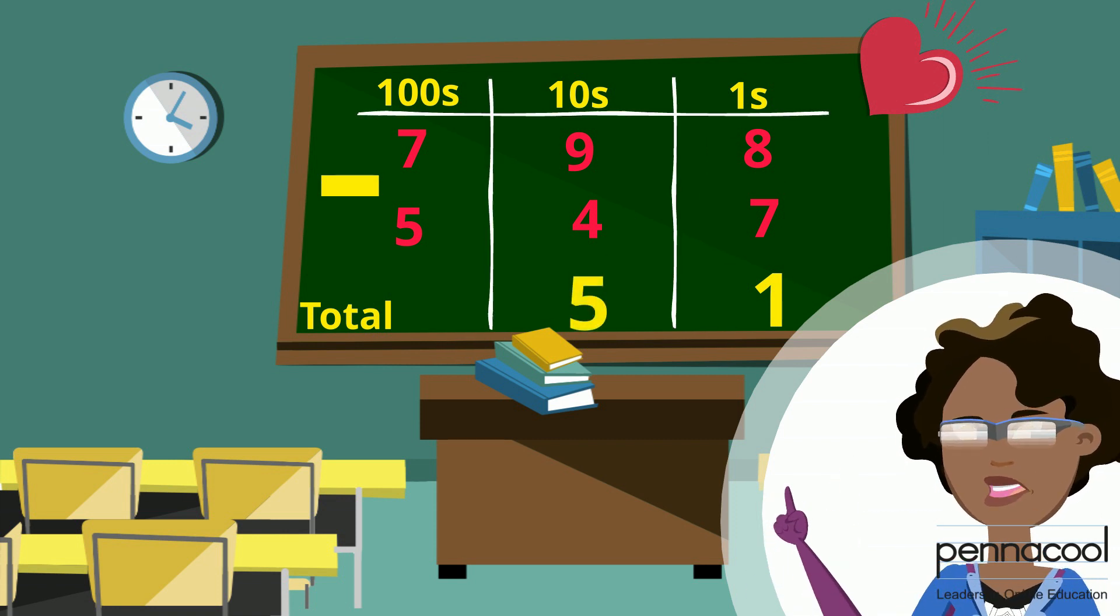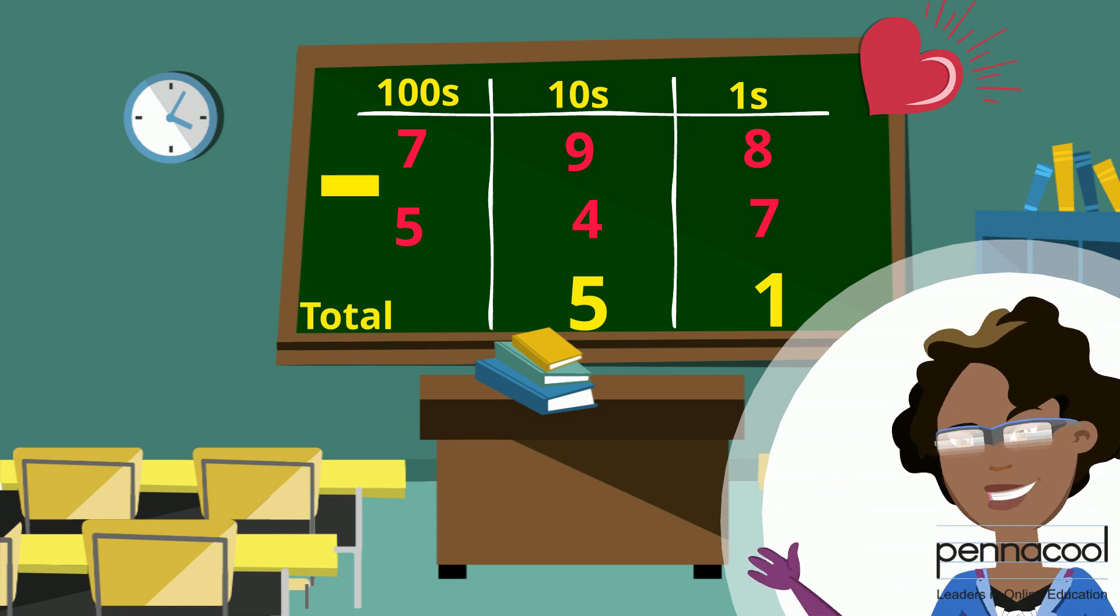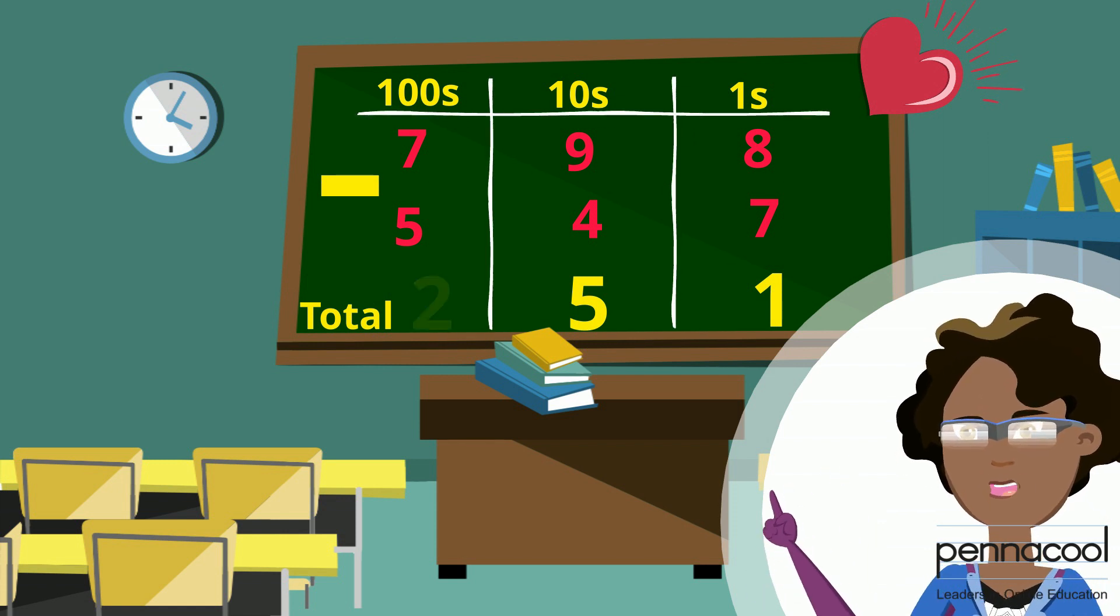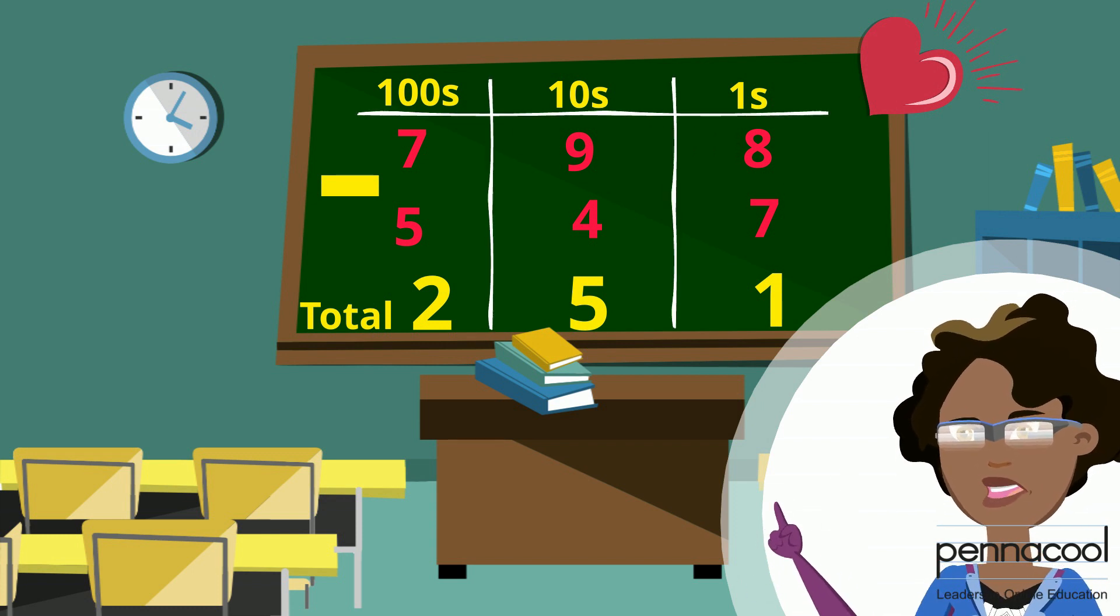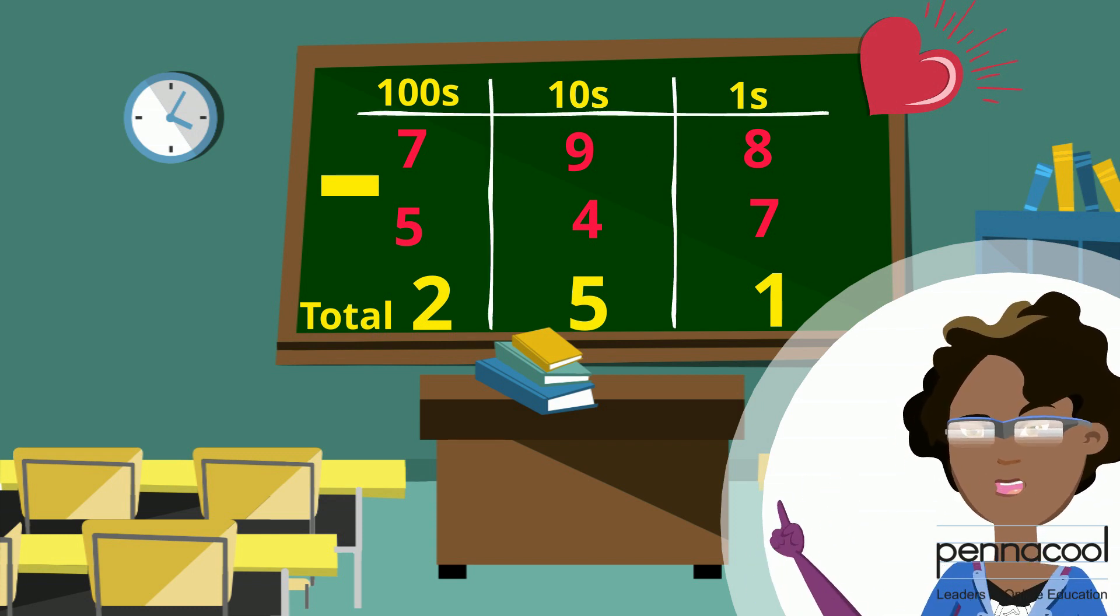And lastly in our hundreds column, we have 7 subtract 5 which equals 2. So we put 2 in our total space under the hundreds column. And now we have our final answer of 251.